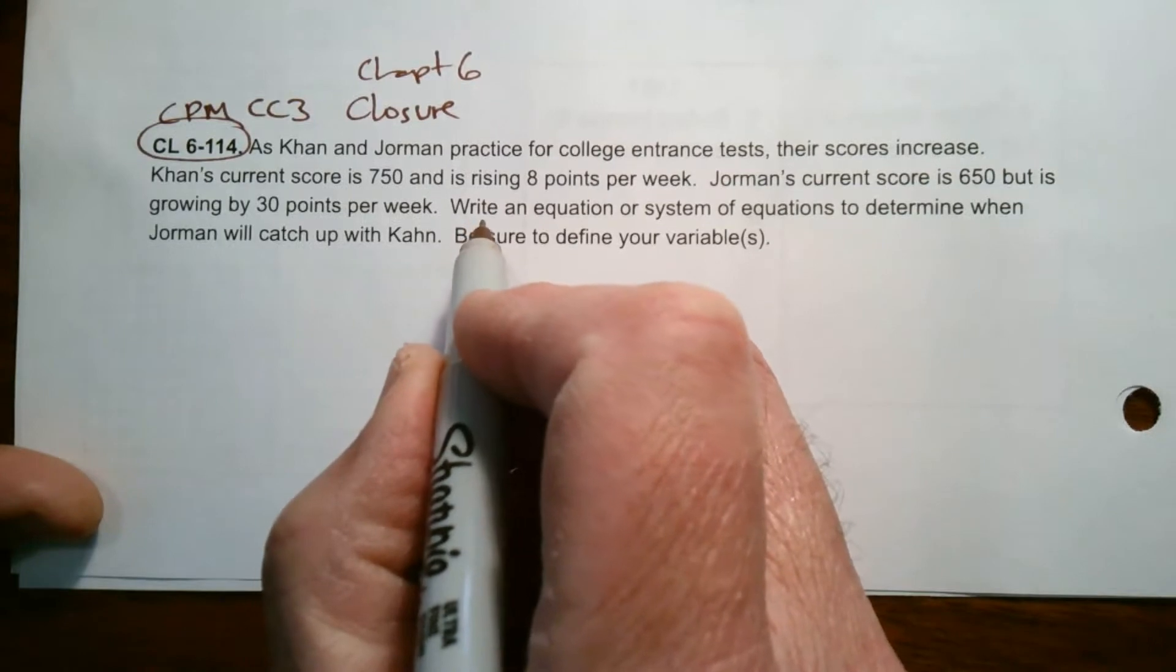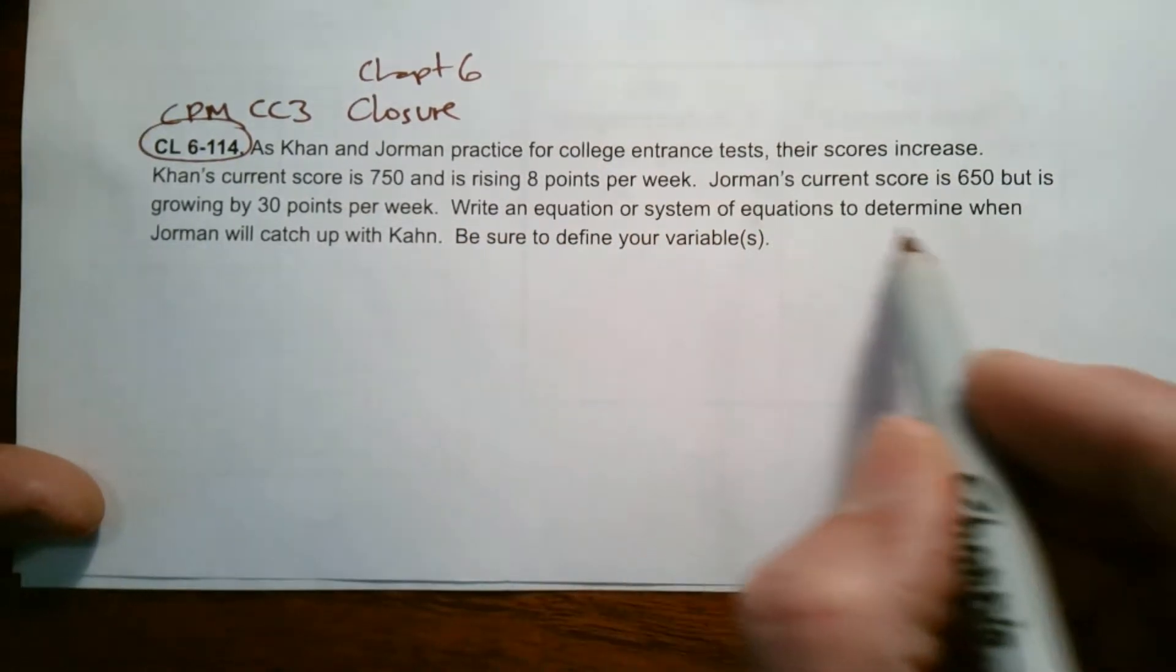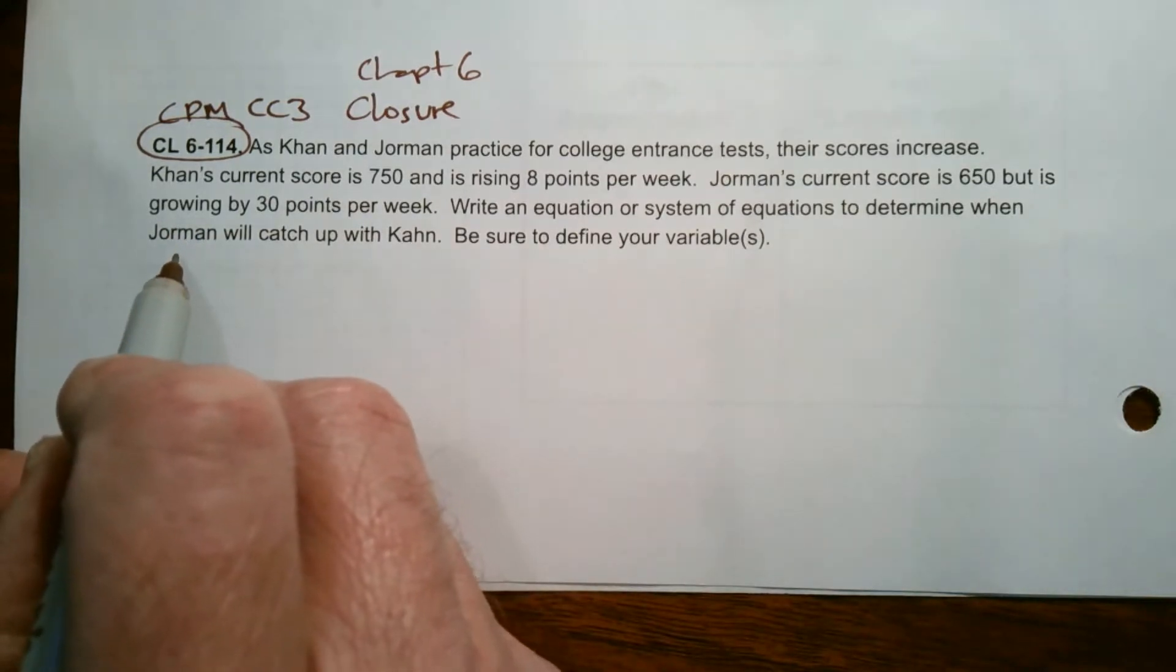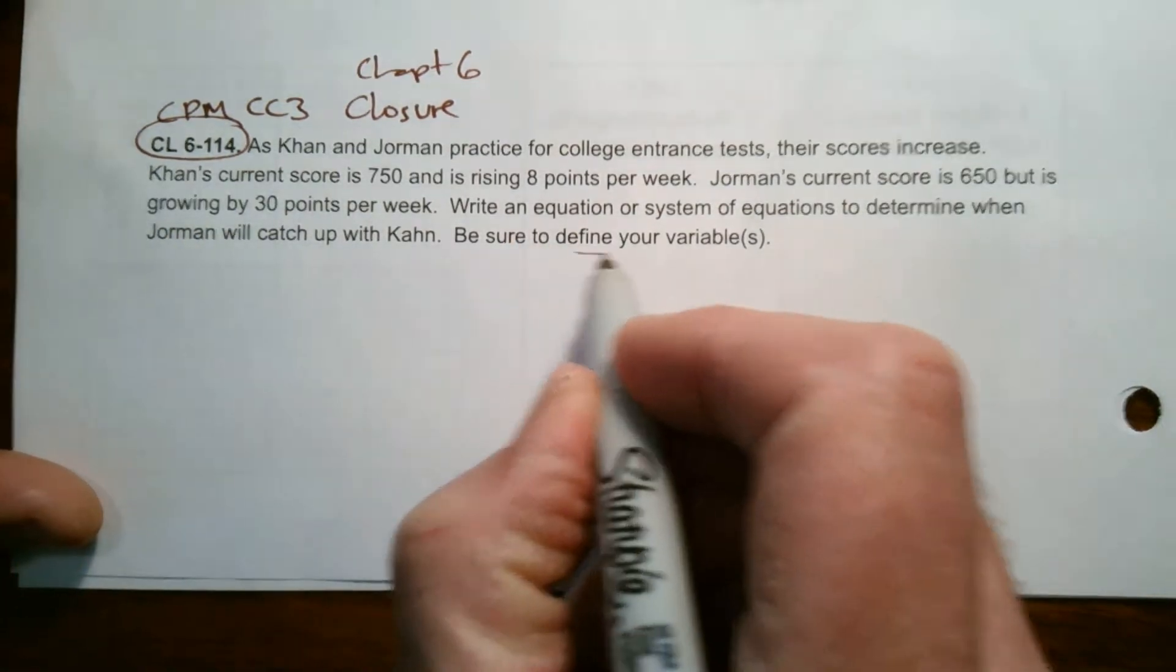So here it gives me the directions to write an equation or system of equations to determine when Jorman will catch up with Khan. Be sure to define your variables.